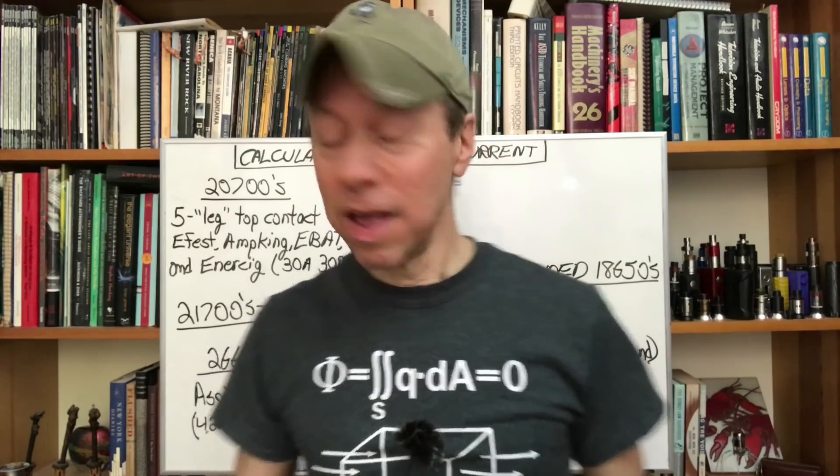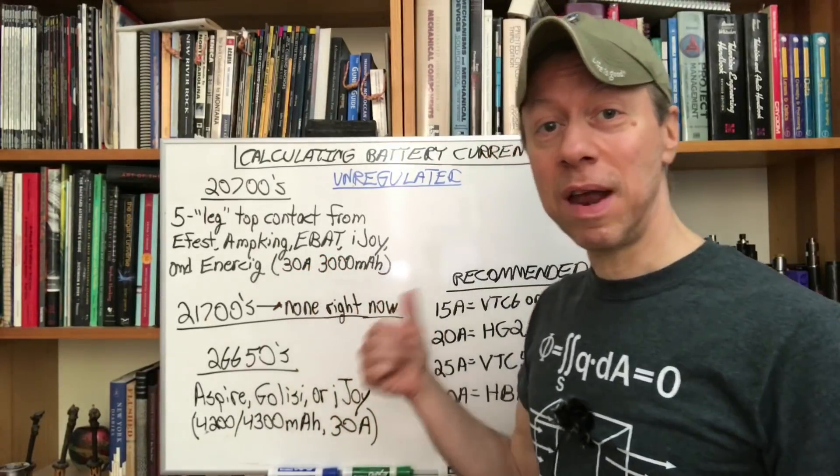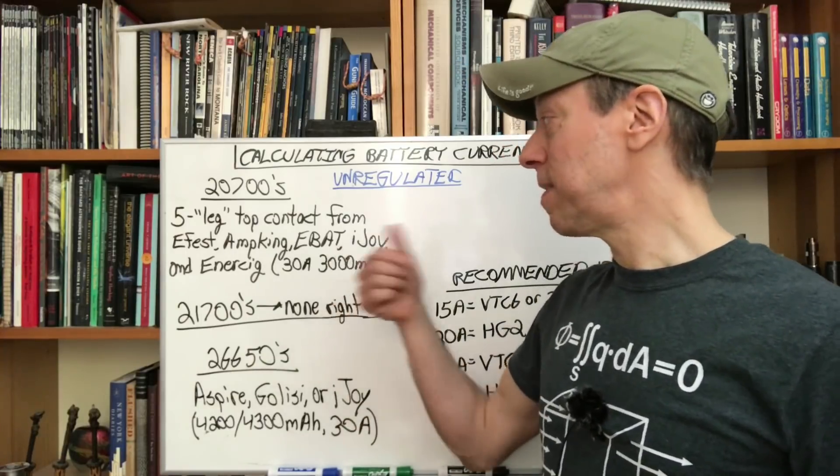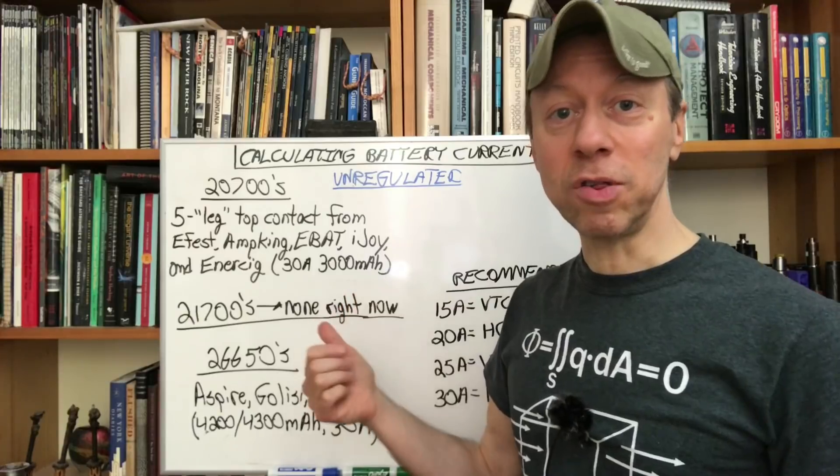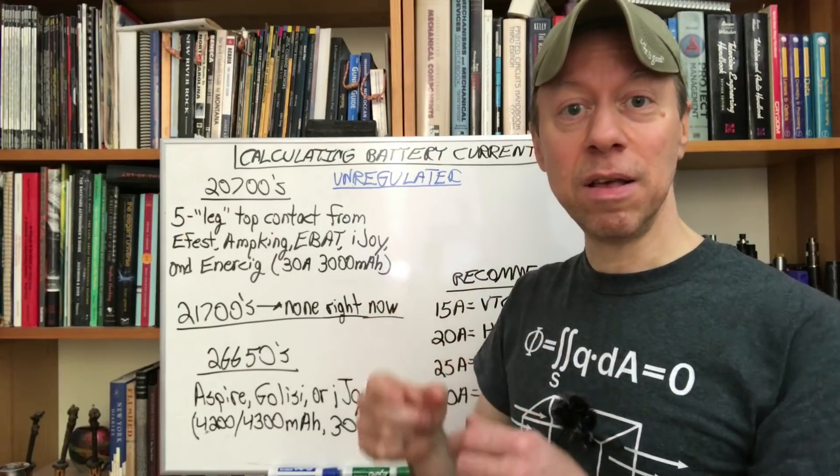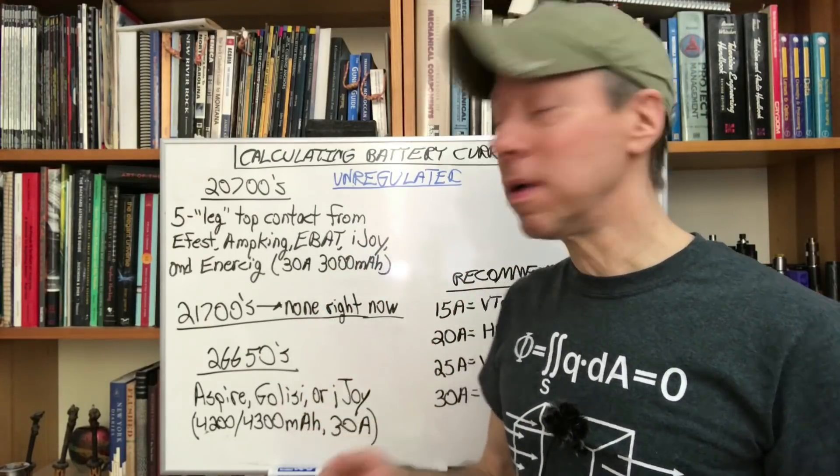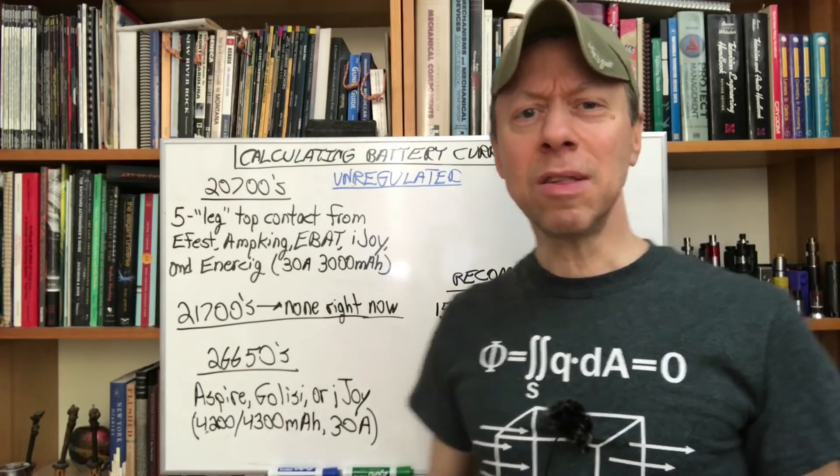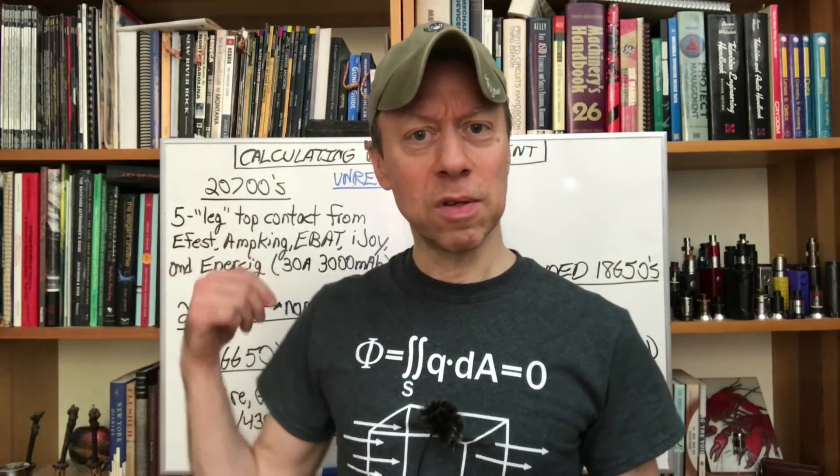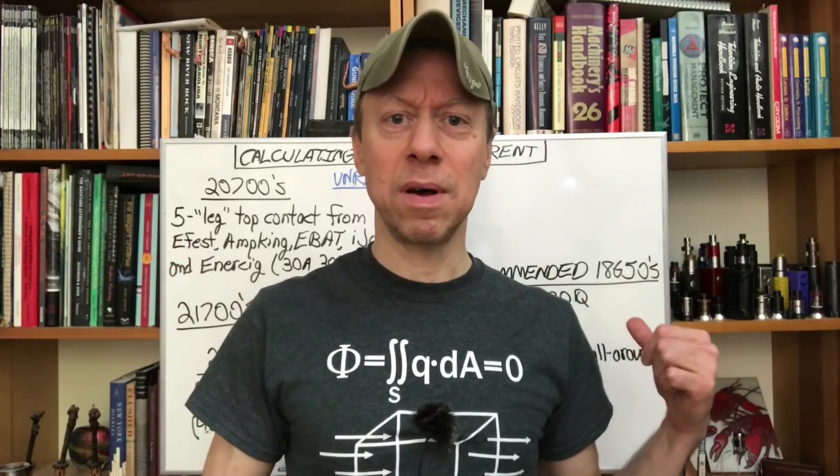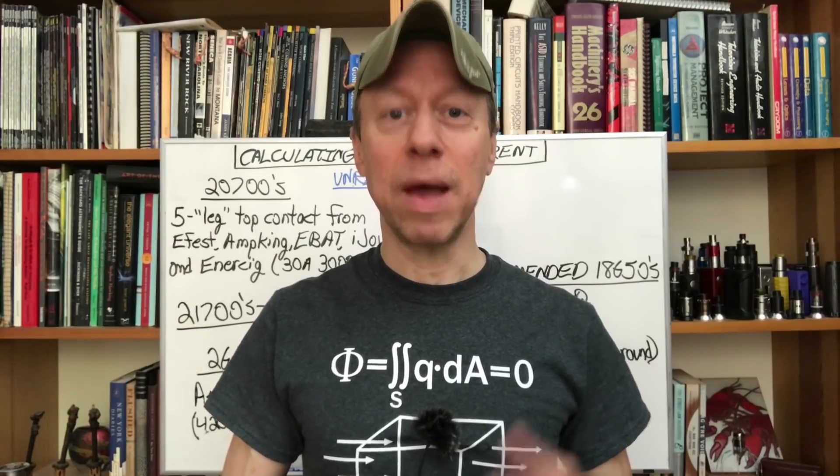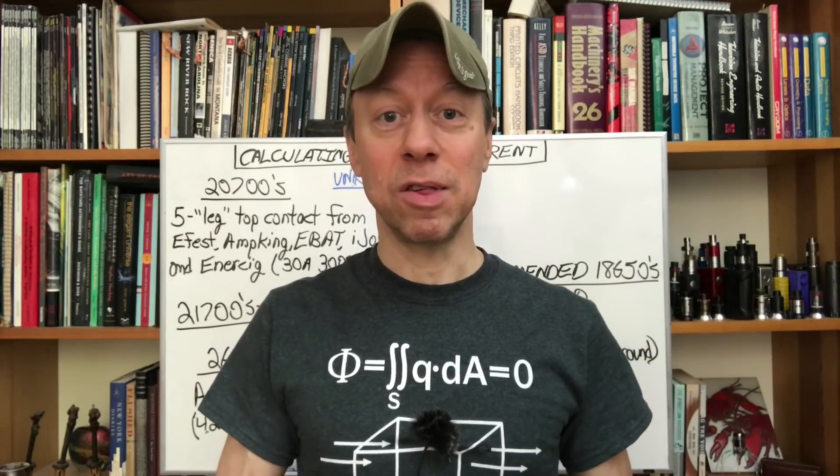Recommended batteries for unregulated use. We're going to start with the 20700s. There's not a lot of choices here. In fact the only ones I recommend are the five leg top contact ones from Efest, AmpKing, eBat, iJoy and Enercig, their EC-27HC. They all have five legs coming down from the top contact. The four leg one from iJoy doesn't perform as well. They're all 30 amp, 3000 mAh and they're decently hard hitters. They do about as well as the HG2 does and some people report better performance with these 20700s than the 3000 mAh 18650s. For me and my testing it was a little bit better but you may have to try them out to see.